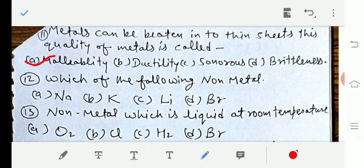Question number 12: Which of the following is a non-metal? Option A sodium, option B potassium, option C lithium, option D bromine. The answer would be D, bromine.